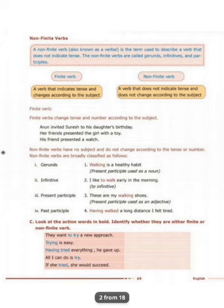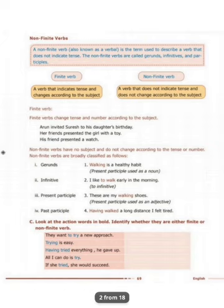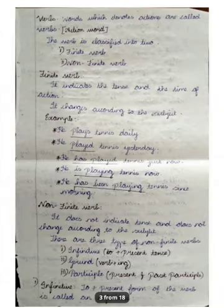The finite verb changes its tense and number according to the subject. For example: 'I invited Suresh to his daughter's birthday' — here 'invited' is the past form. 'Her friends presented the girl with a toy,' 'His friend presented a watch.' Words which denote action are called verbs.